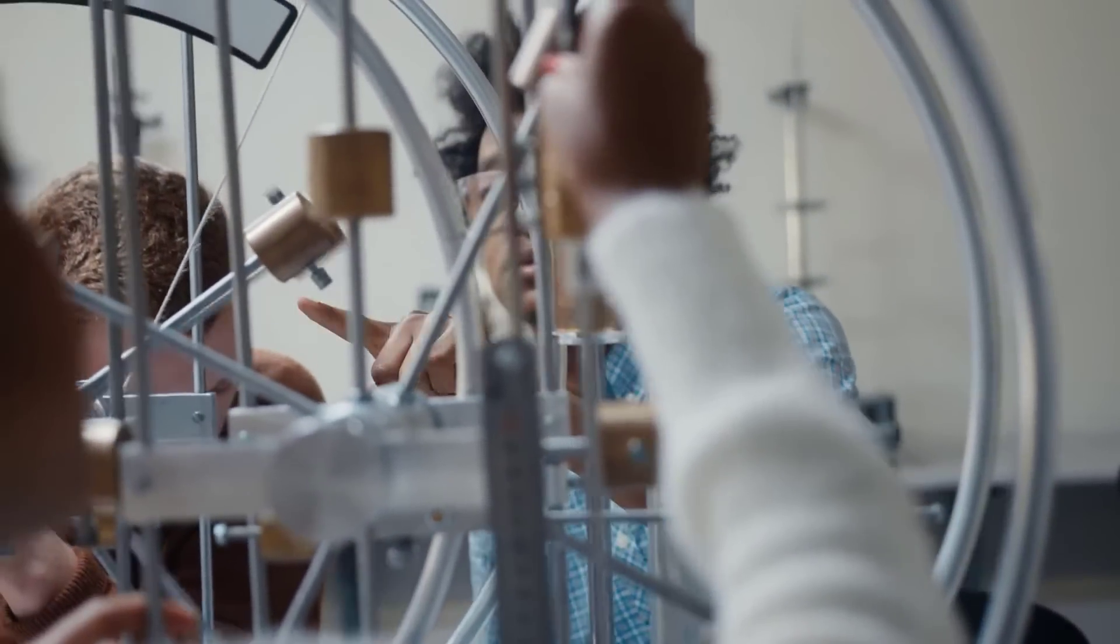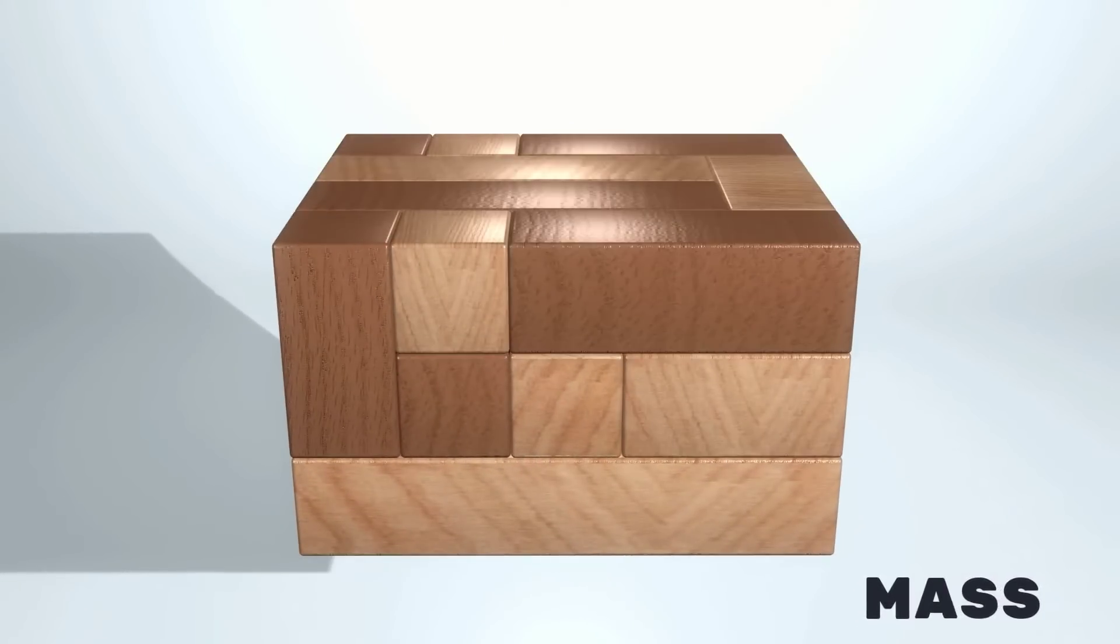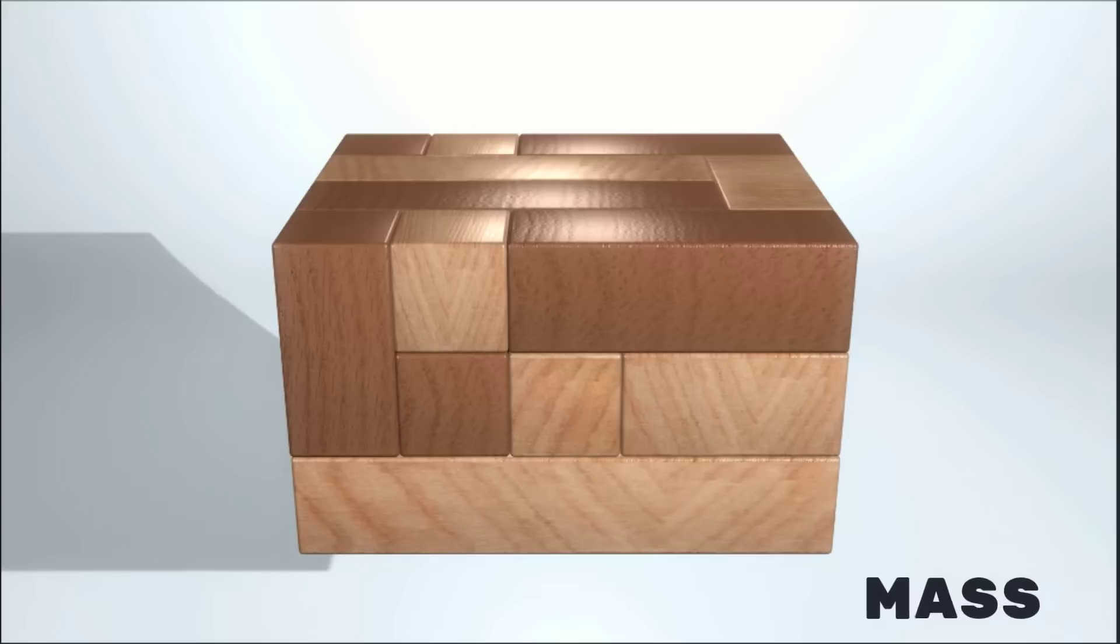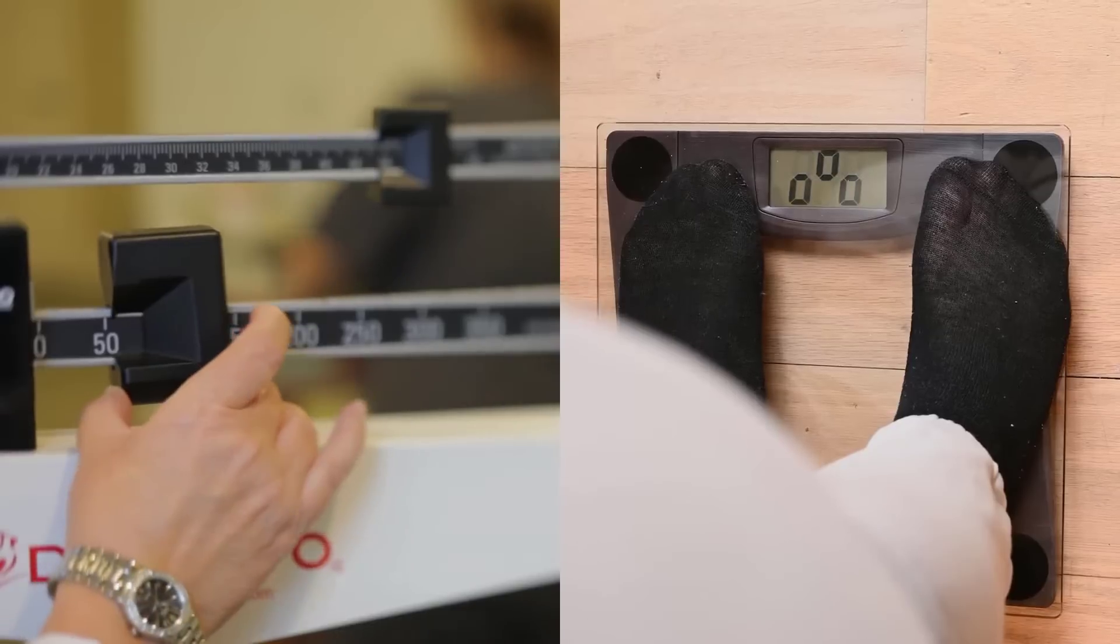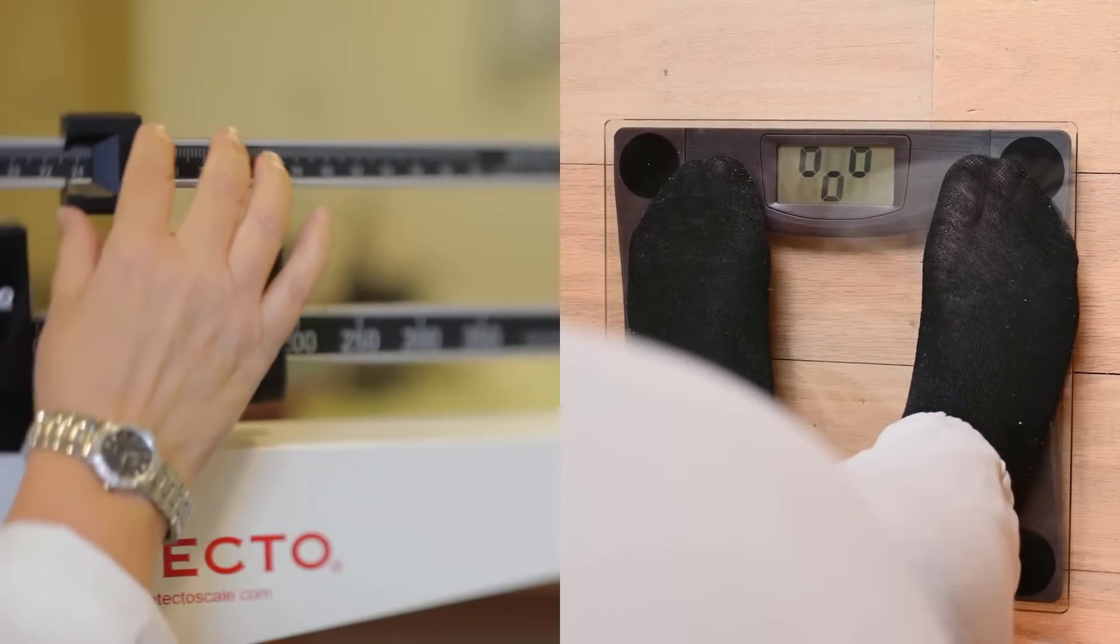For example, mass is the amount of matter that a body has. It is measured in kilograms or grams and the instrument used to know the mass of a matter is the weight or balance.